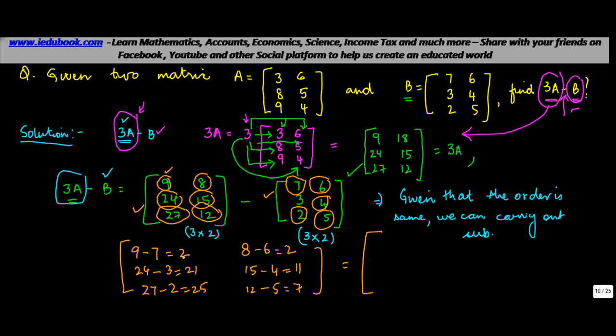So 9 minus 7 gives you 2. You just pick up these independent results and put them in a matrix. So this matrix is basically equal to 3 times A minus B.